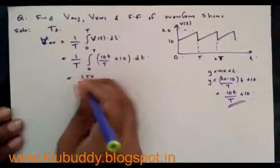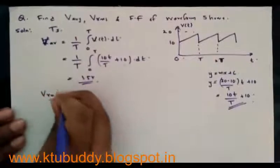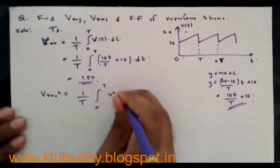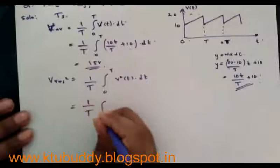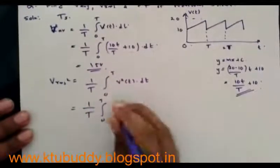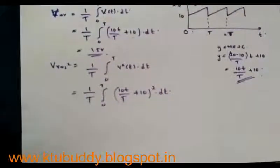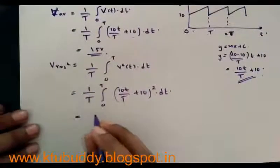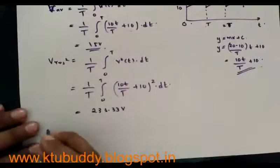Similarly, for V_rms, we have the equation: V_rms squared equals 1 by T integral 0 to T of V squared of t into dt. That is giving the expression 1 by T integral 0 to T of (10t divided by T plus 10) whole squared into dt. By solving and integrating this expression, we get the value of V_rms squared as 233.33 volts, and the value of V_rms is equal to the root of that, which is 15.27 volts.